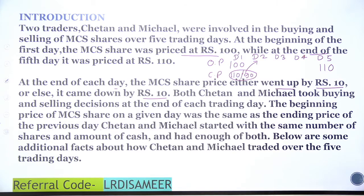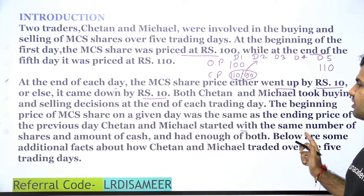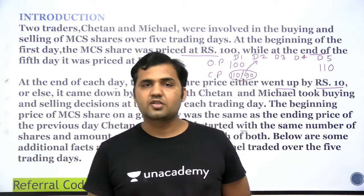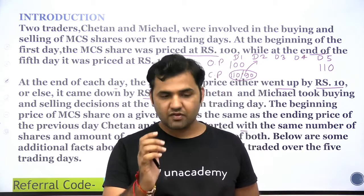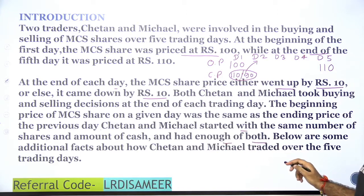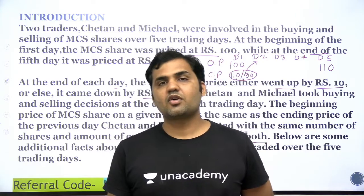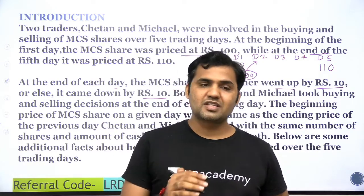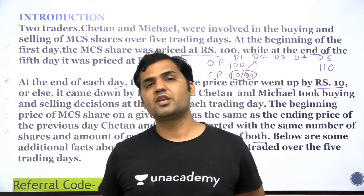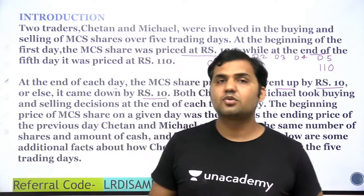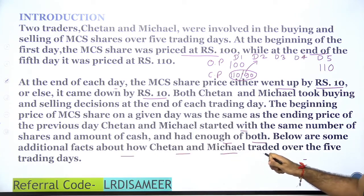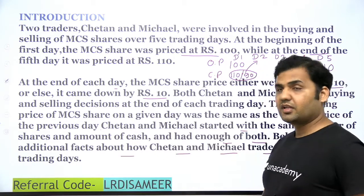Chetan and Michael started with the same number of shares and the same amount of cash. The value is not specified, but both their share count and cash amount are identical. They also had enough of both — meaning they can purchase any number of shares and they can also sell any number of shares. Below are some additional facts about how Chetan and Michael traded over the 5 trading days.